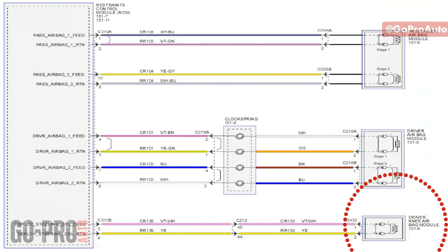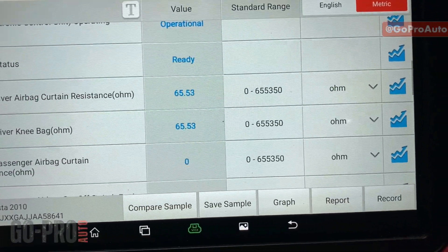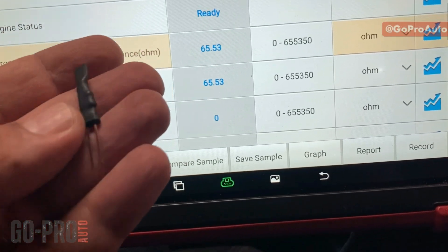How do we start the diagnosis? Even though we can read the resistance on the scan tool and know the specification, we cannot check the internal resistance of the knee airbag itself with a multimeter, because the multimeter provides some voltage and there is a chance it may deploy the airbag. For safety reasons, never check the internal resistance of any airbag with a multimeter. So we're going to remove the knee airbag, but since I don't have a replacement part, I need to identify the faulty component first before ordering a new one.